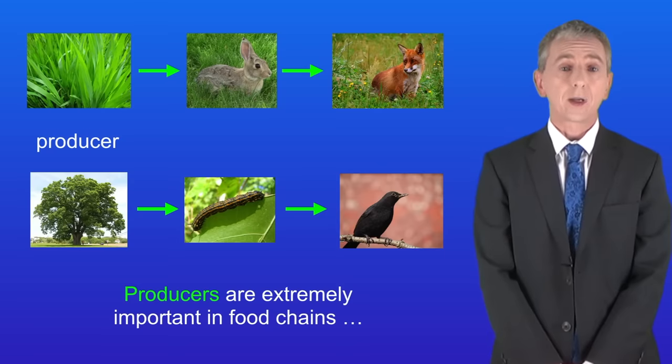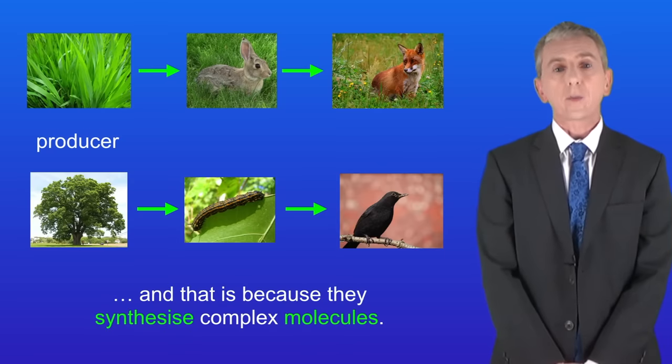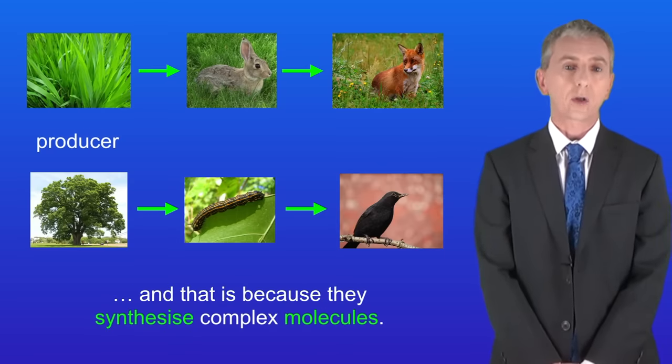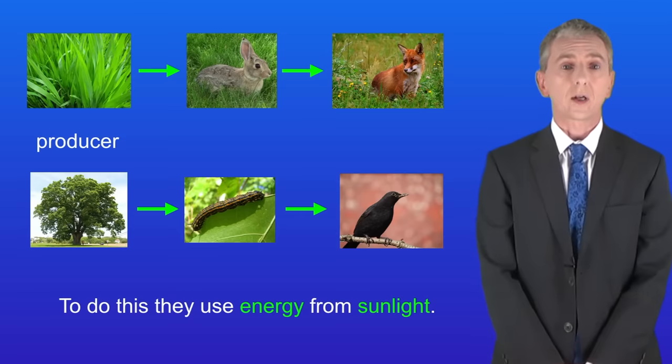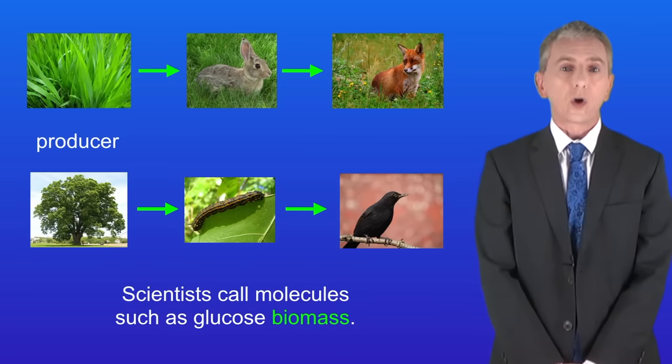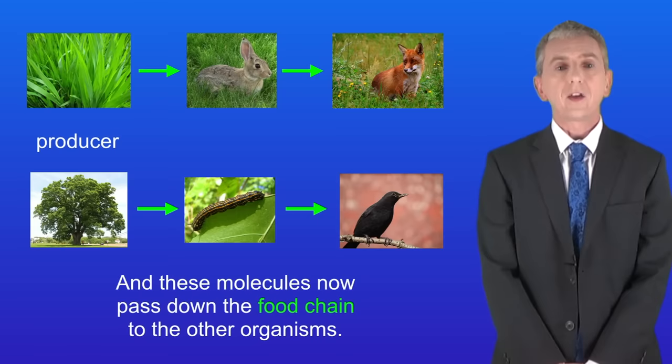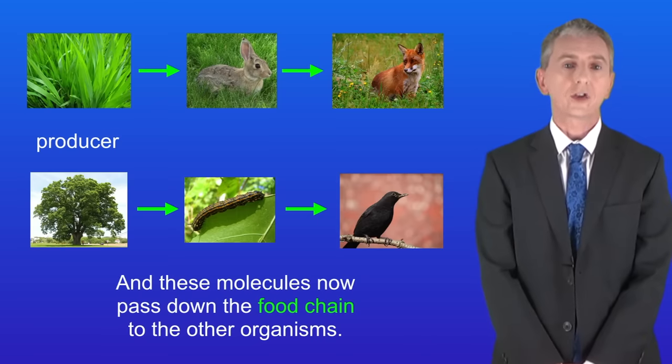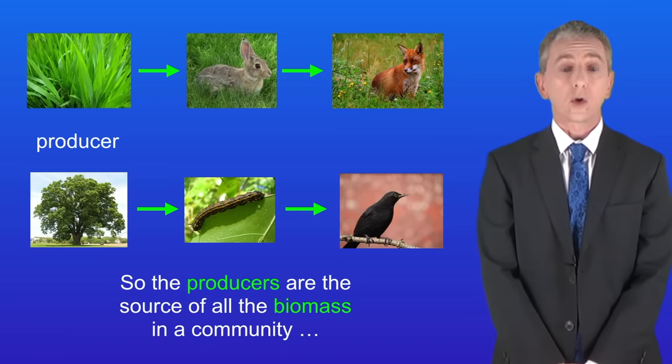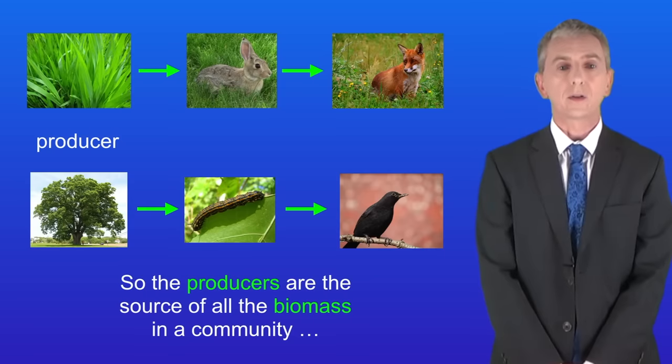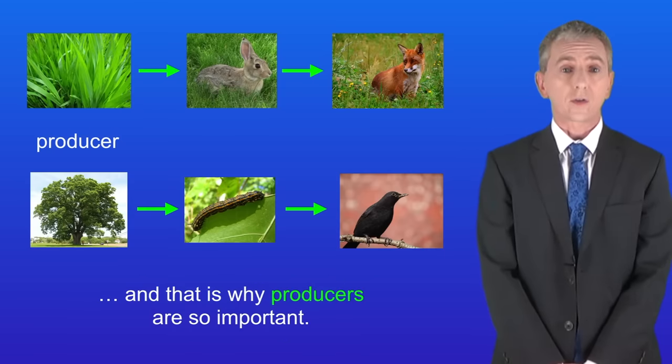Now producers are extremely important in food chains and that's because they synthesize complex molecules. As we've seen before green plants make the molecule glucose by photosynthesis and to do this they use energy from sunlight. Scientists call molecules such glucose biomass and these molecules now pass down the food chain to the other organisms. So the producers are the source of all the biomass in a community and that's why producers are so important.